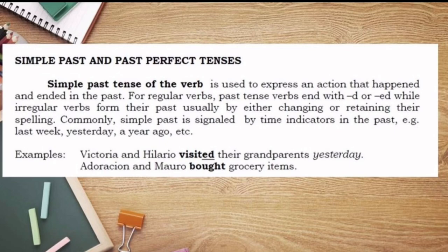Simple past tense of the verb is used to express an action that happened and ended in the past. For regular verbs, past tense verbs end with 'd' or 'ed,' while irregular verbs form their past usually by either changing or retaining their spelling. Commonly, simple past is signaled by time indicators like 'last week,' 'yesterday,' 'a year ago,' etc.